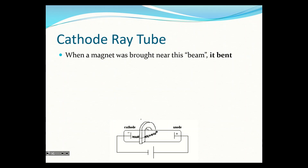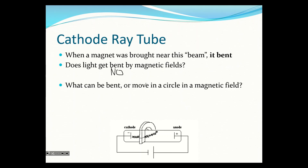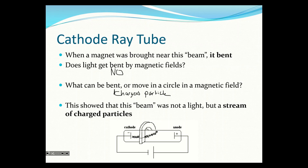The fact that a magnetic field is making that beam bend means it's not actually light — it looks like light but it's not. A magnetic force bends charged particles moving through it. We've done lots of studies on magnetic fields and what can move in a circle in a magnetic field: a charged particle can. So maybe this beam of light wasn't actually light — it was a charged particle. This showed that the beam was not light but a stream of charged particles.